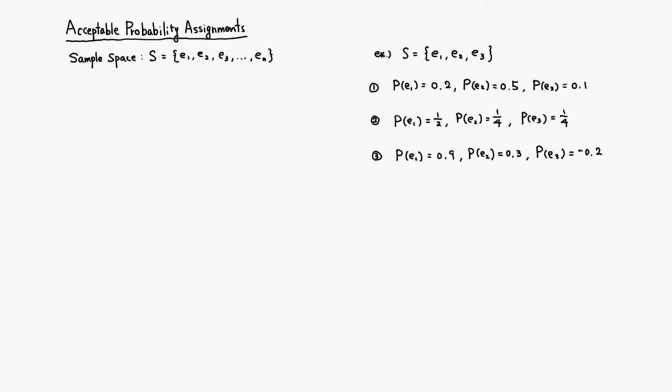Let's look at acceptable probability assignments. You have a sample space S with outcomes e1 through en. When you assign probability to each outcome, there are a couple rules you have to follow, but other than that you can assign any number you want. First condition: since we're talking about probability, probability of each outcome must always be between zero and one.